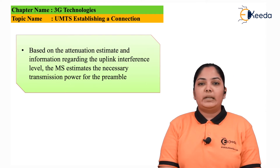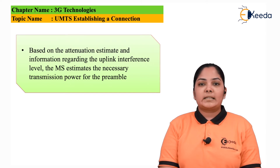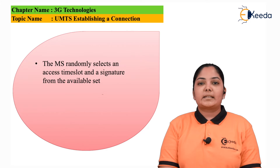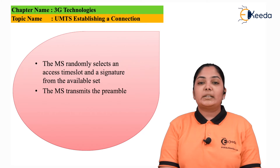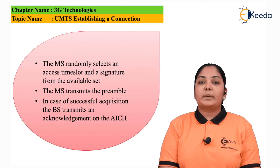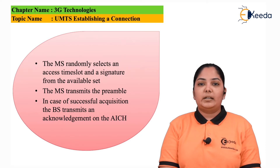Attenuation means how much is the path loss. Based on the attenuation and the uplink interference level, the mobile estimates the necessary power required to transmit the preamble. If the path loss is extremely high, more power is required; if the path loss is less, nominal power is sufficient. The mobile station then randomly selects a time slot and signature from the available set and transmits the preamble. In case of successful transmission, the base station acknowledges on the AICH (Acquisition Indication Channel).